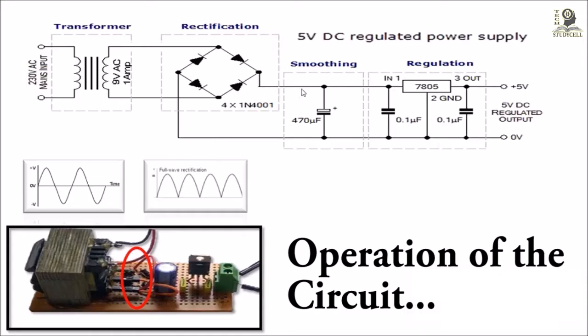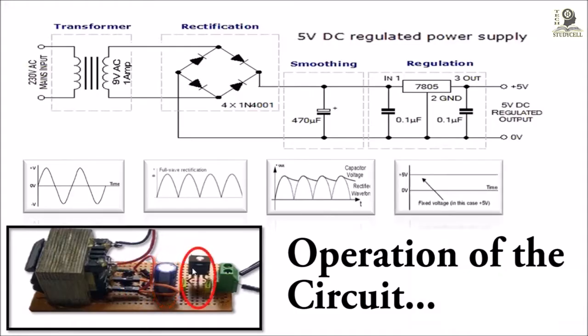After that we will use a capacitor to filter the ripple in the circuit, and then we will feed the supply to IC LM7805. At the output of the IC we will get a constant 5V DC supply.